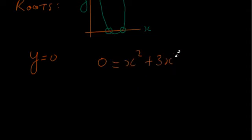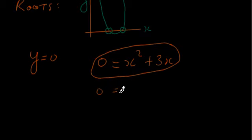What it really boils down to is solving this equation for x. And what we notice right away is that we can factor the right-hand side. We can factor an x out of both of these terms, and we pull out an x from the first term and the second term, and we're left with this.